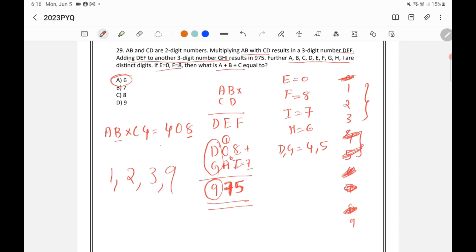Now what will be B? Because this is the unit digit here and this is the unit digit here. Here the unit digit is 8. So the only possibility is this becoming 2, because 2 into 4 is 8. So 2 we have written. Now balance is 1, 3 and 9.